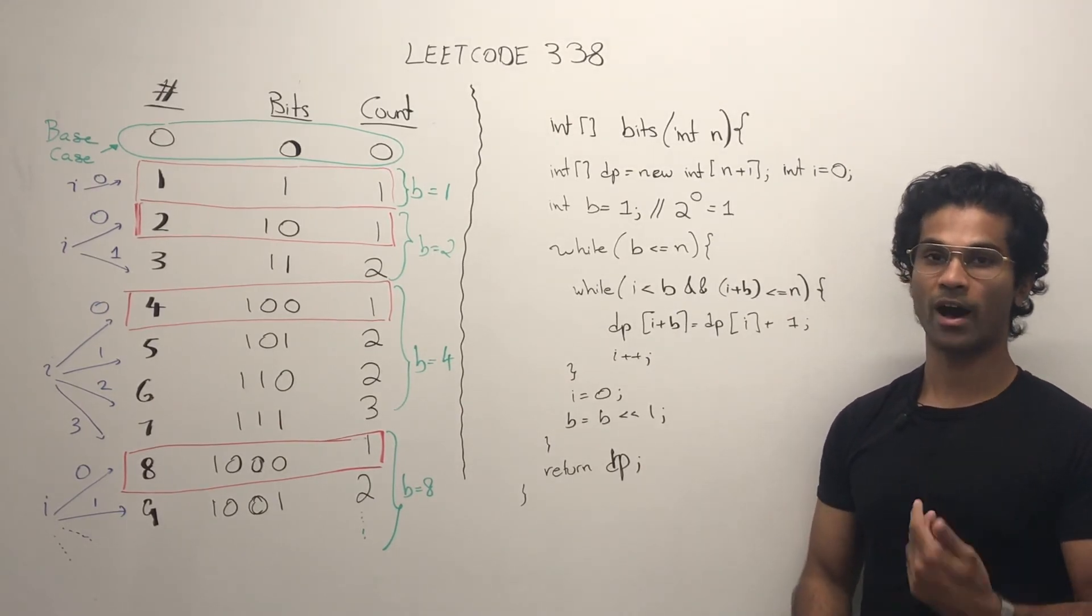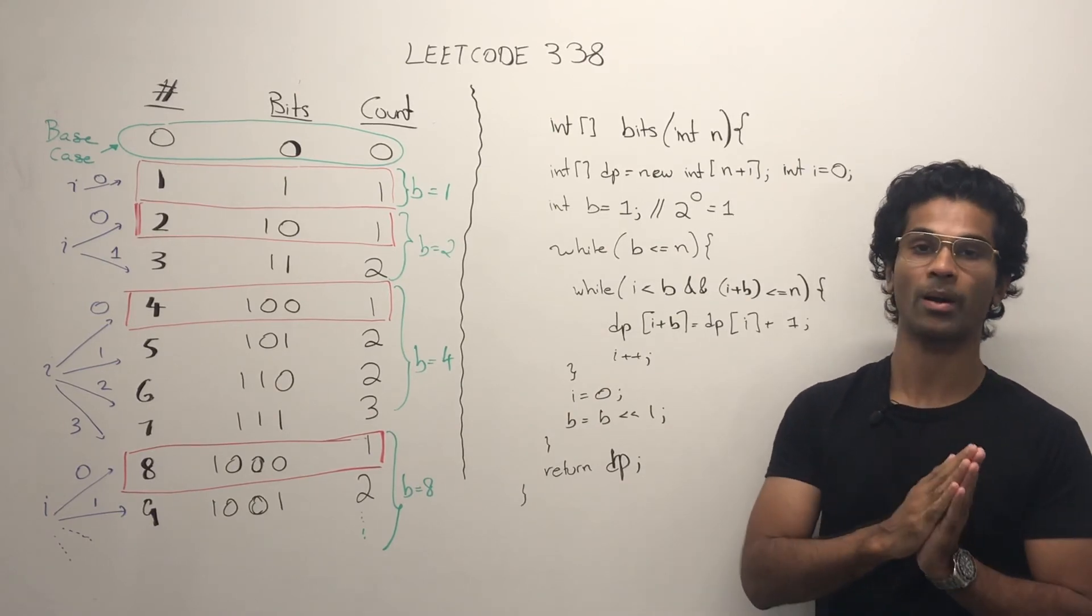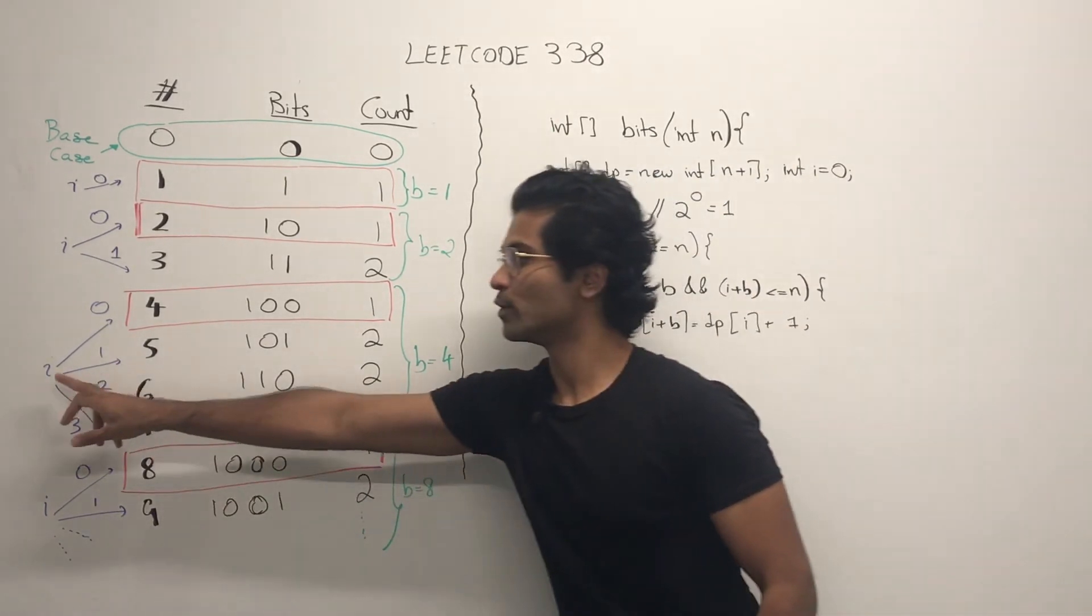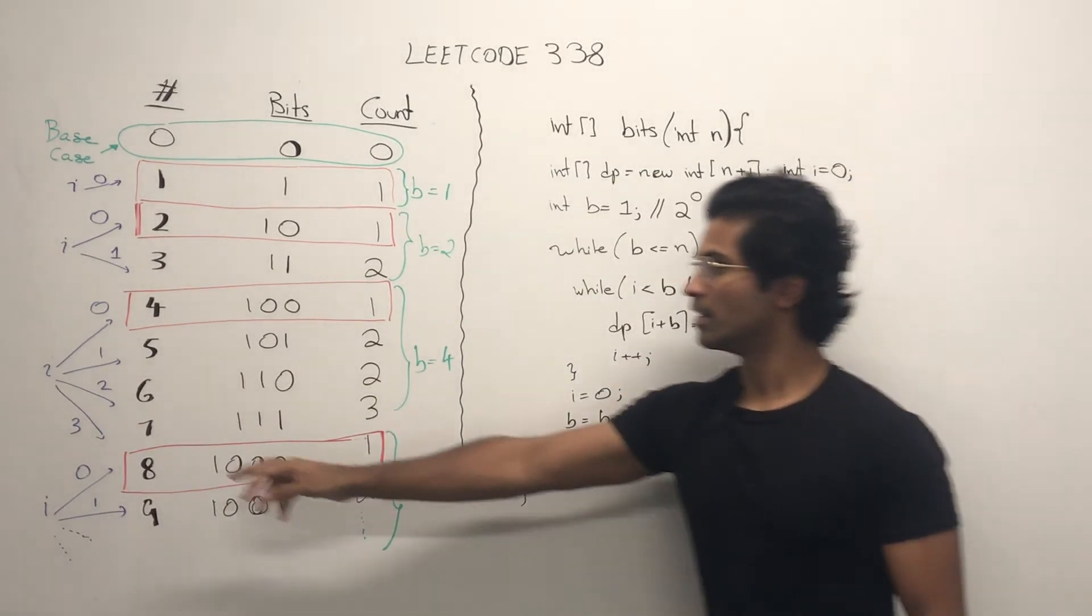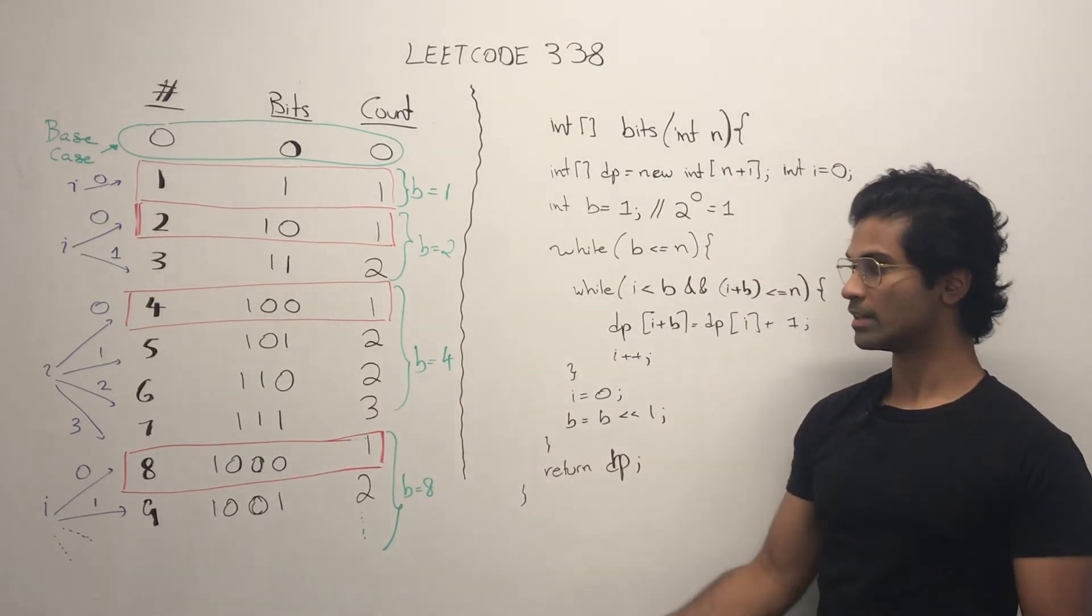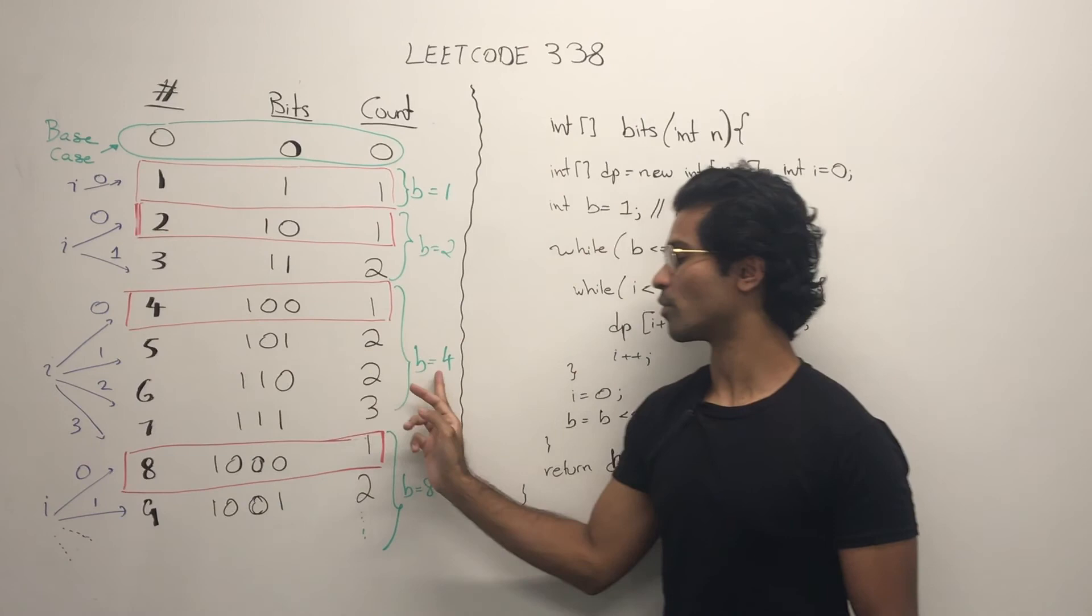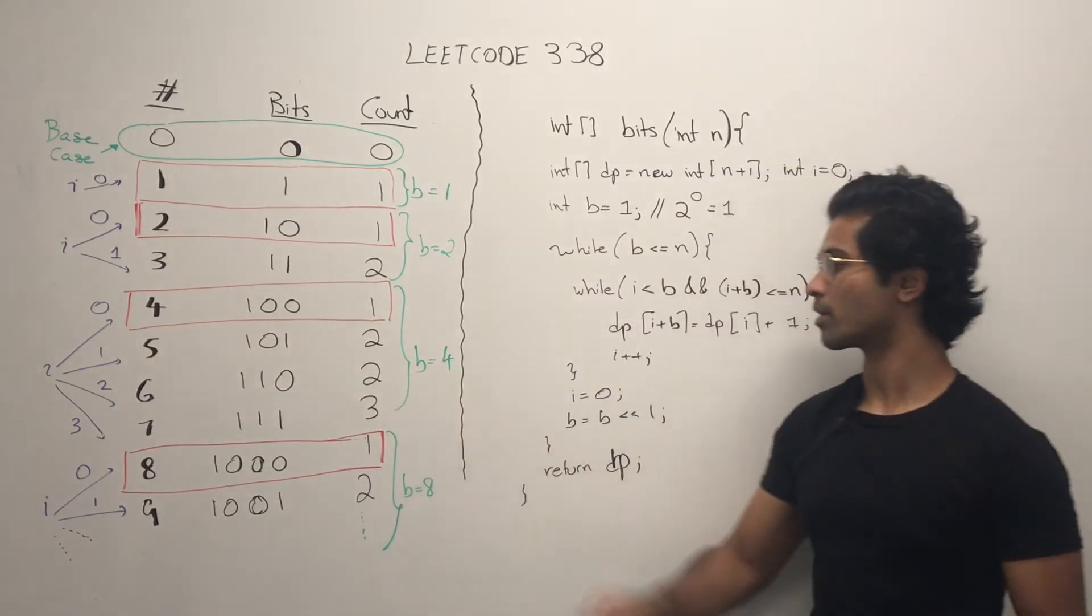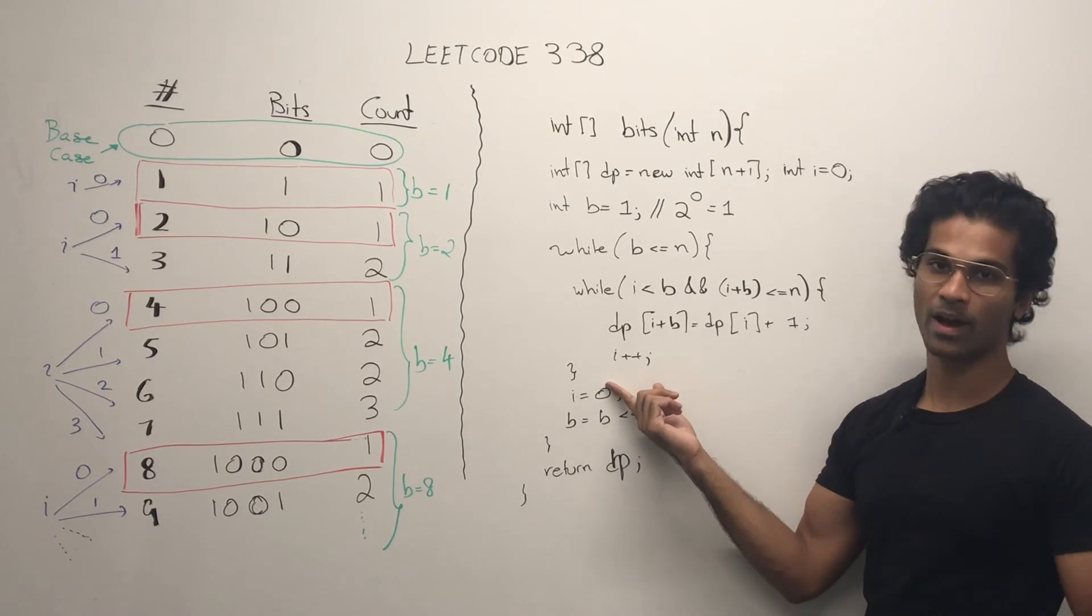When we begin our block, then we reuse i as a sort of pointer variable which goes within the bounds of the block B. So i goes from 0 to 3, and that's how we reuse it. DP of 3 plus 4, 7, depends on DP of 2 plus 4, depends on 1 plus 4, depends on 0 plus 4. That's how we do it for this DP, and every time we increment the i pointer.